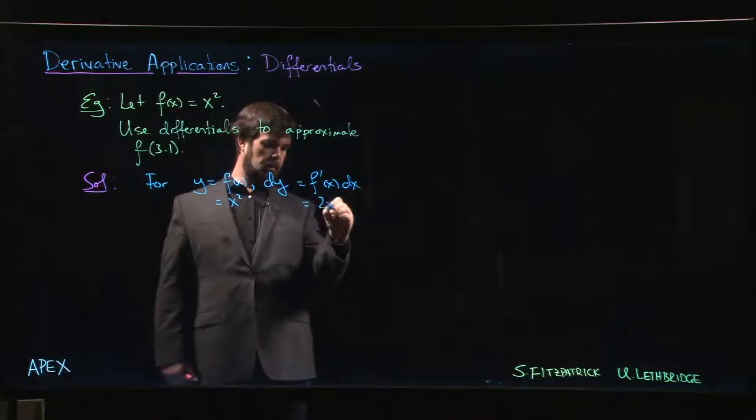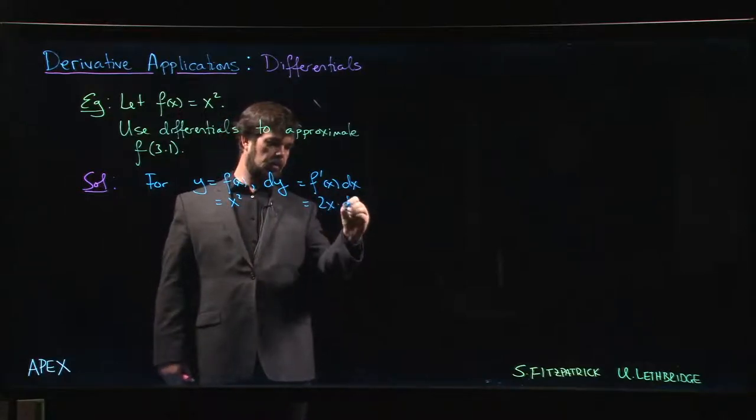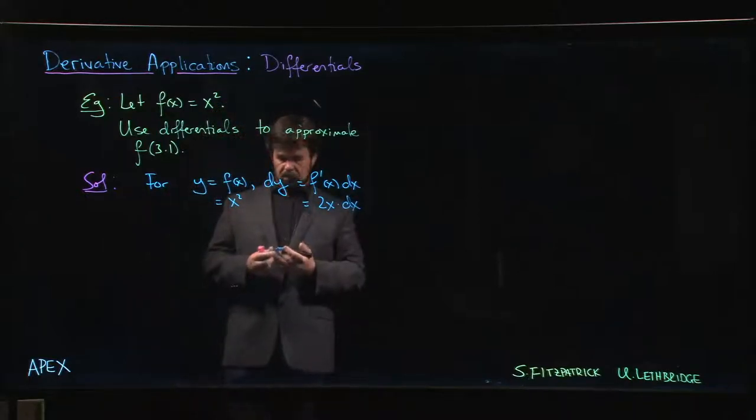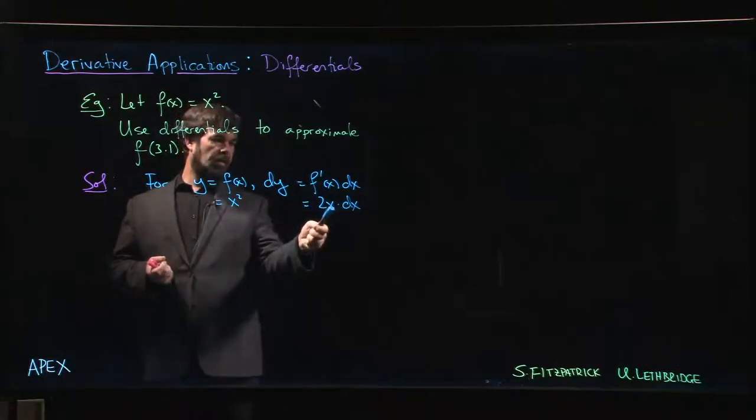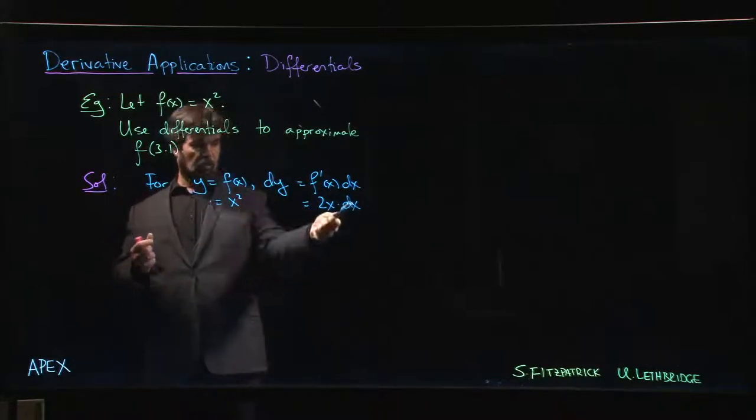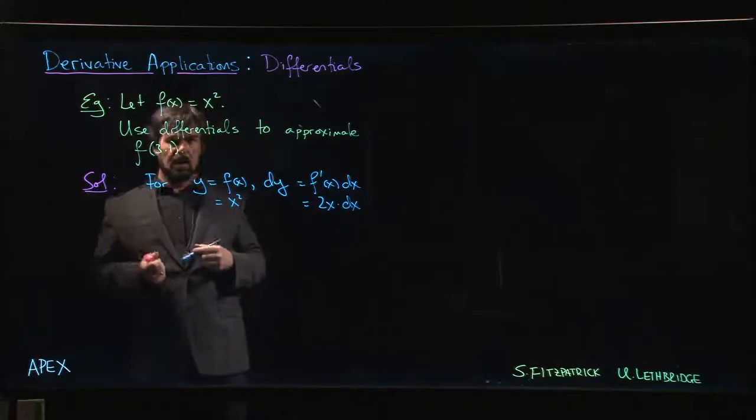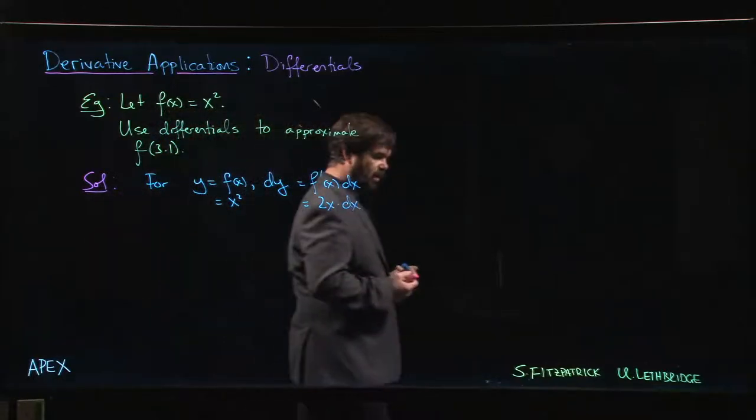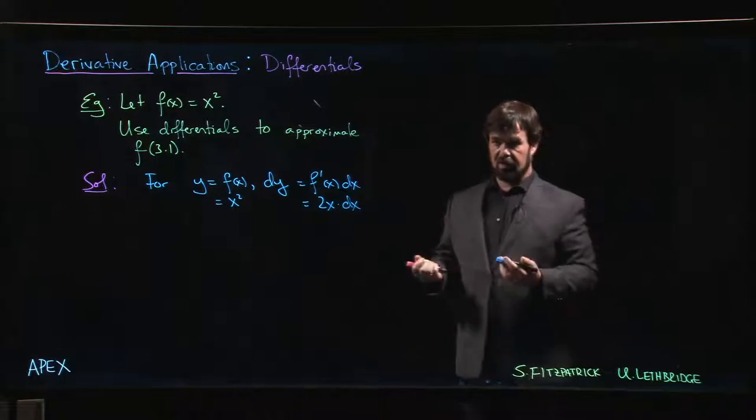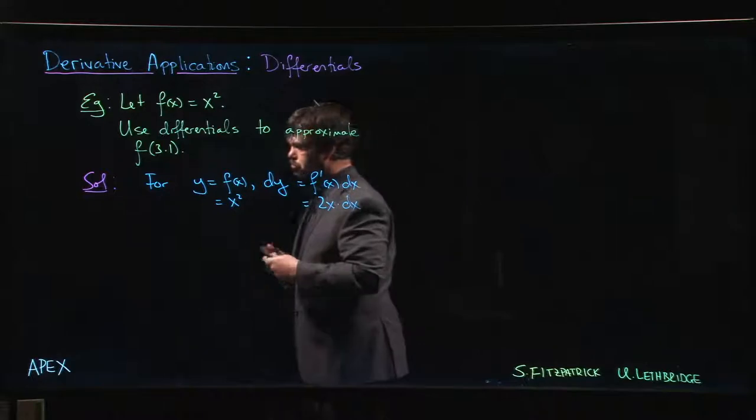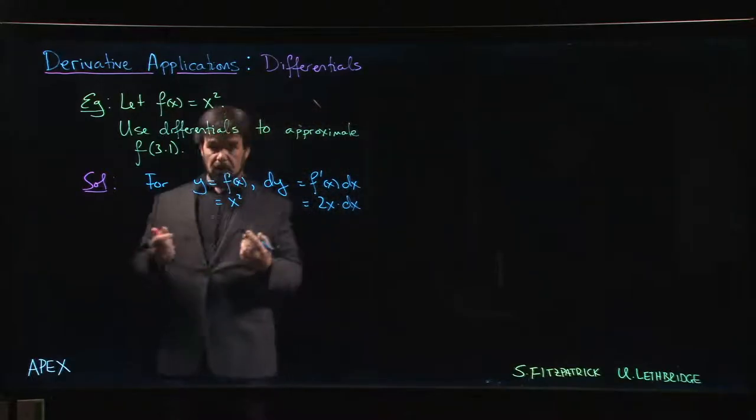Now we have to choose a value for x which will give us a corresponding dx to reach 3.1. You want to choose this value as close to what you're approximating as possible, and typically go for something simple, like an integer value.